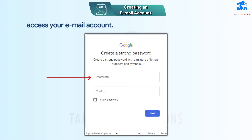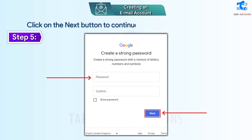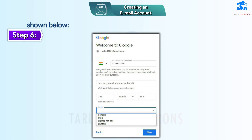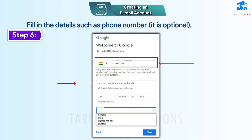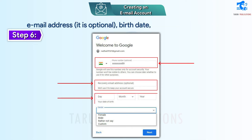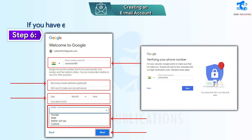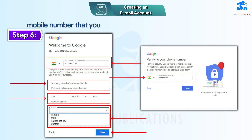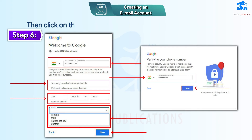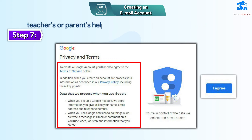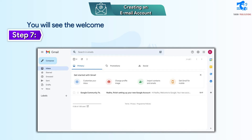You have to remember your password and username in order to access your email account. Step 5 – Click on the Next button to continue. You will see a screen asking for personal information. Step 6 – Fill in the details such as phone number (optional), recovery email address (optional), birth date, and select your gender from the drop-down menu. Then click on the Next button. If you have entered the phone number, a new window will open in which you have to enter the verification code sent to the mobile number specified in the previous step. Then click Next. Step 7 – You will see a screen with terms and conditions; ask your teacher or parent for help to understand them. Click on the 'I Agree' button. You will see the welcome screen of your Gmail account.